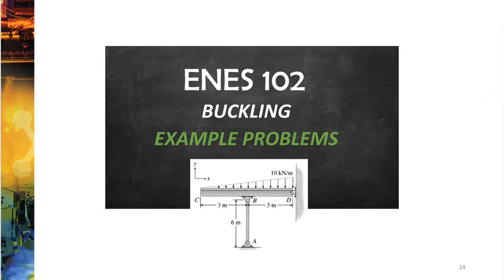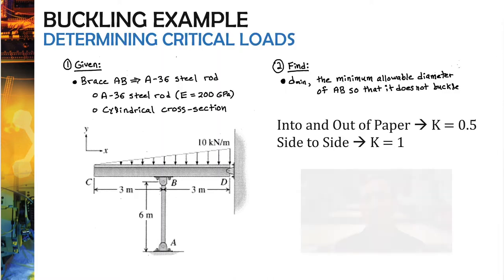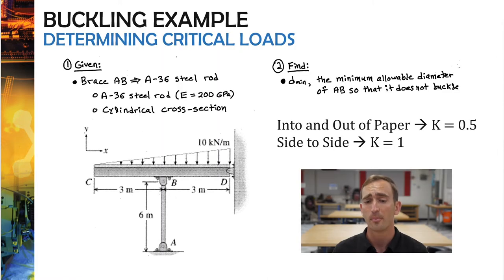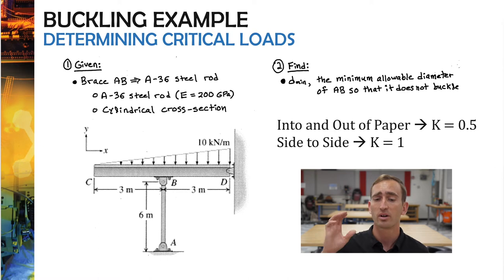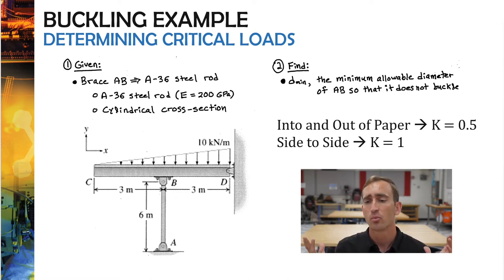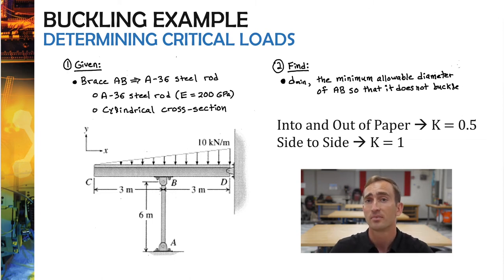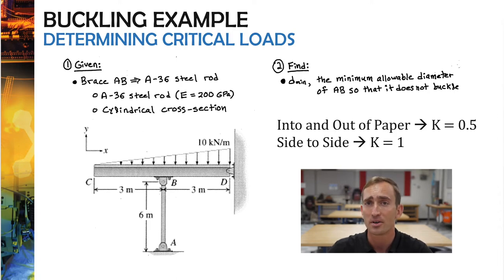Now let's go over a couple of different example problems by hand and showcase how the buckling equation can be used in very common statics problems. Let's take a look at this particular problem, which is a beam CBD supported by a column AB, which is pinned and pinned. We're asked to determine what is the minimum allowable diameter of column AB such that that system doesn't buckle.